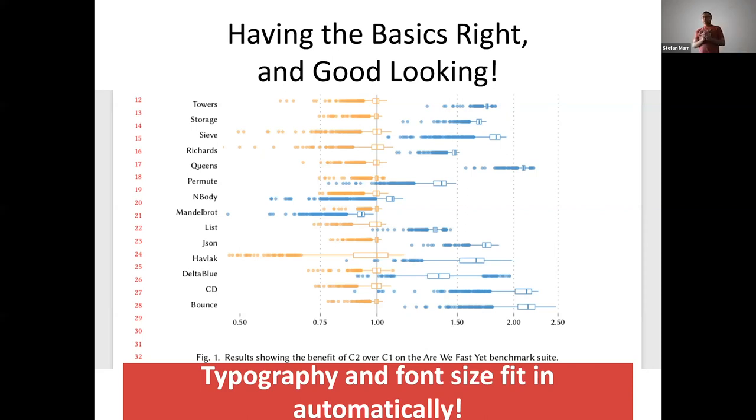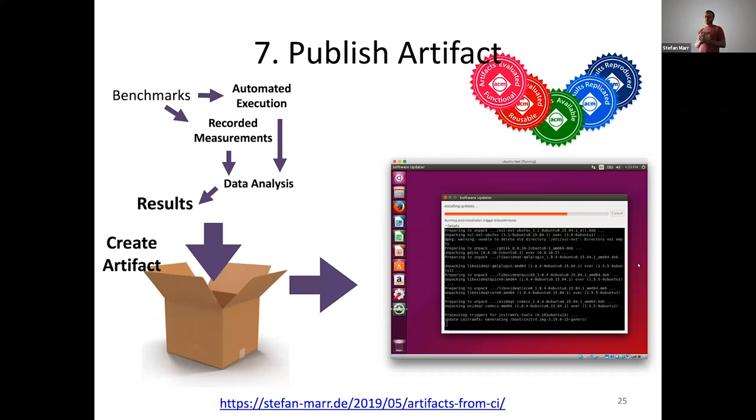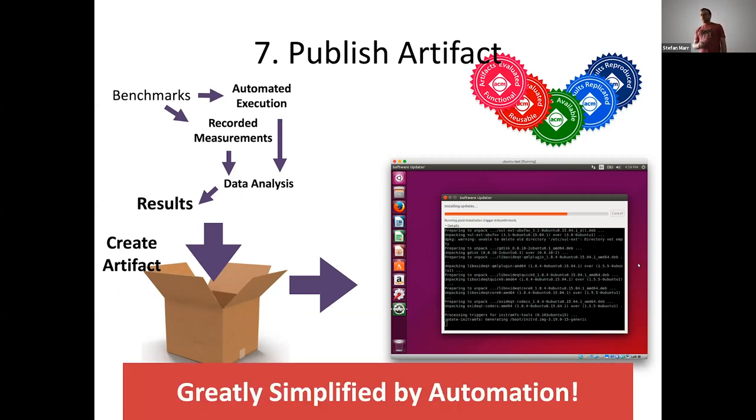So, once we publish the paper, now we have the question of, can we make our system accessible to other people? And, I would argue, this putting a lot of effort into automating continuous performance tracking, we kind of are at a point where we just need one single extra script. And, I have been blogging about that before, you see the link below, to turn that whole setup into an artifact, which then can be evaluated. So, here's the idea that you take your scripts, make it executable for others, package it up to a virtual machine image, perhaps, that people can simply use and verify that the research that you did actually makes sense. So, again, automation greatly simplifies that process and itself can also be automated.